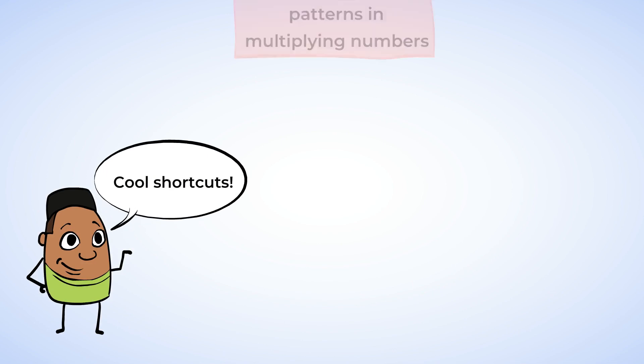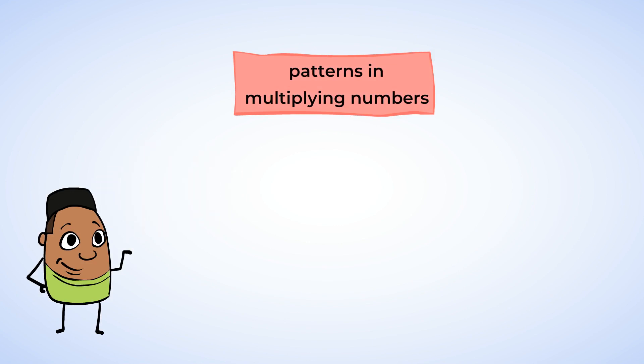Have you ever noticed patterns when you multiply numbers? Let's list some of the multiples of 2s. 2, 4, 6, 8, 10, 12, 14, 16, 18, 20, 22. Take a look at the last digit of each number. Can you spot a pattern?